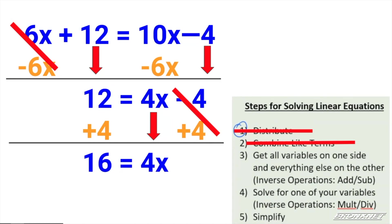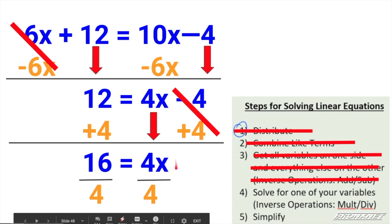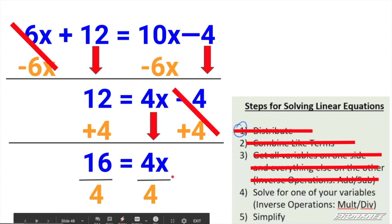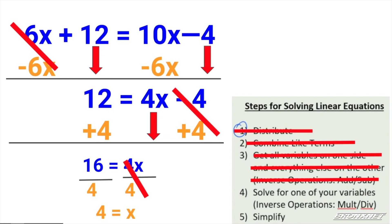Now it looks like I've done everything in step three. Let's move to step four, where we need to solve for our variable. We're isolating the variable through inverse operations. When you see a coefficient next to a variable without a symbol, it is assumed to be multiplication, and the inverse of multiplication is division. So we divide each side by the coefficient — in this case, 4. 4 divided by 4 is 1. We do not write a 1 in front of a variable. And 16 divided by 4 is 4. So x equals 4.